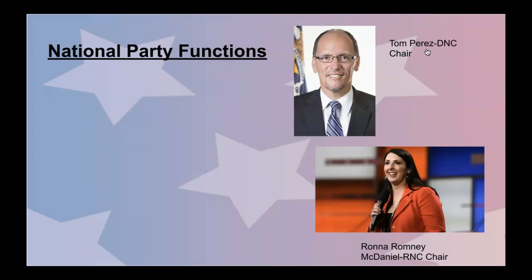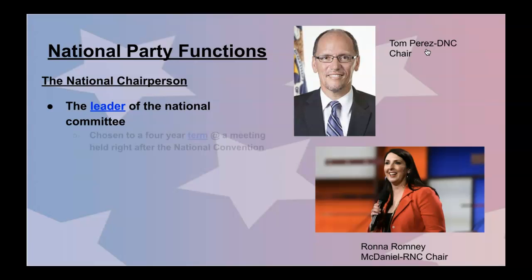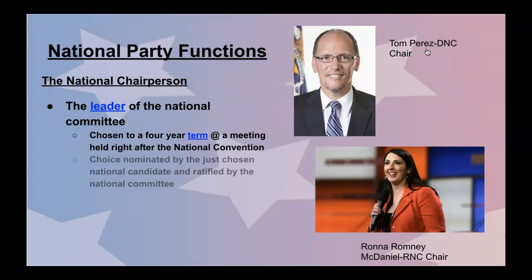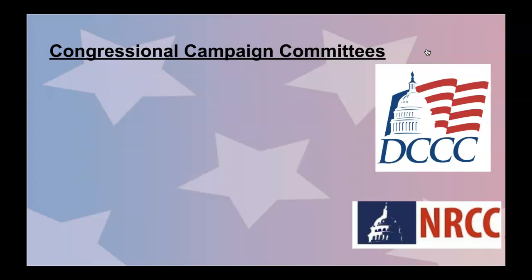The two top people of their respective political party committees are the national chairpersons. Tom Perez is the head of the DNC and Ronna Romney McDaniel is the head of the RNC. They are the leaders of the national committee, chosen to a four-year term at a meeting held right after the national convention. They are in charge of organizing the people, nominating the best people, and getting more and more people to vote for their party. The choice is nominated by the chosen national candidate and ratified by the national committee, so not everybody directly votes for who heads these committees.